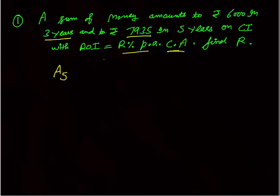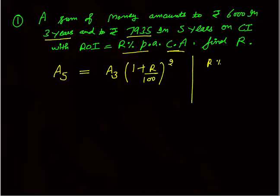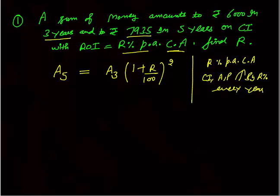Let A5 stand for the amount after five years, and A3 for the amount after three years. Can I say A5 equals A3 grown at R% for two years? That is A5 = A3 × (1 + R/100)². So: 7935 = 6000 × (1 + R/100)². This is the key equation I told you about — in compound interest, the principal increases at R% every year.